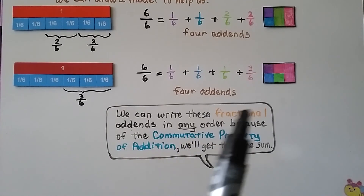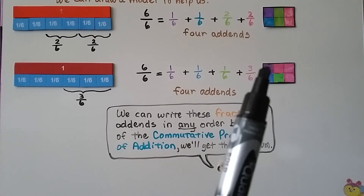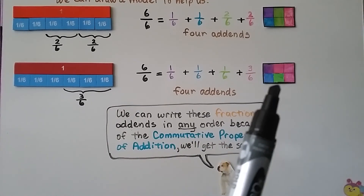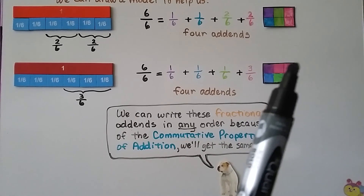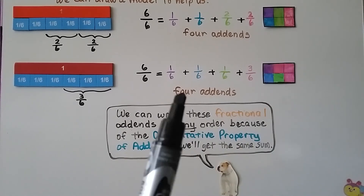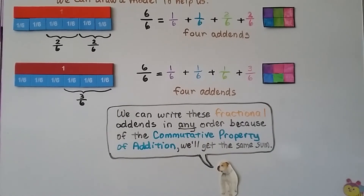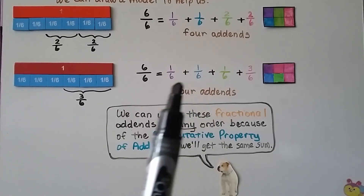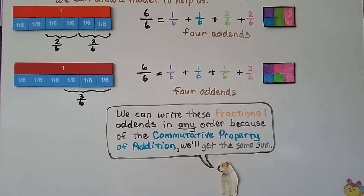We can also break it apart into 1 sixth, 1 sixth, 1 sixth, and 3 sixths — that's 4 addends that equal 6 sixths. And we can write these fractional addends in any order because of the commutative property of addition, and we'll get the same sum.